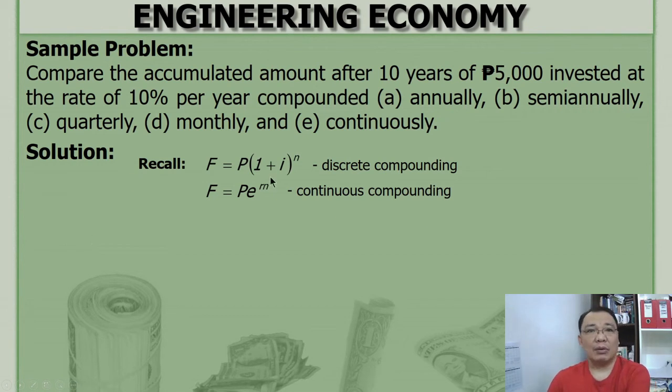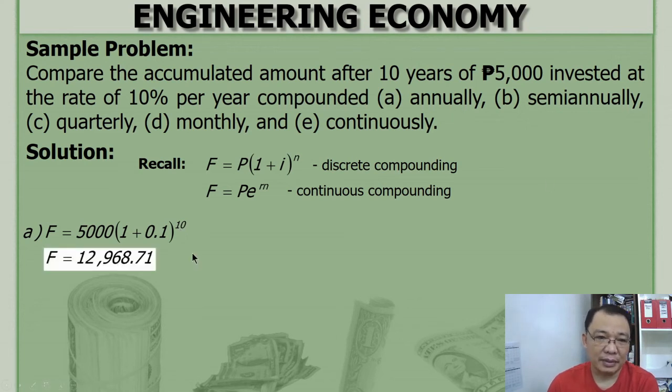So letter A, annually. Annually is one interest period per year. So I is simply R over 1. I is interest rate per interest period, so that's nominal rate divided by number of periods. But then annually, so equal ra ang IOCAR. That is 5,000 times 1 plus I, and 10 years, 10 periods. Once a year. The accumulated amount is 12,968.71 pesos.